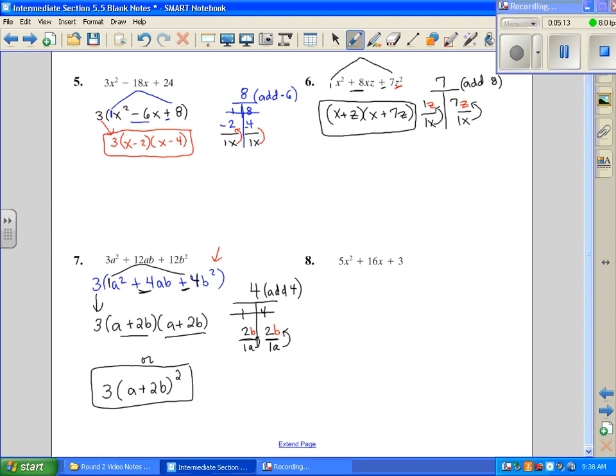Let's look at number 8. We're also going to do the same thing. Check for GCF, there is no GCF. So we're going to start with our bottoms up. We're looking for what multiplies to give us a 15, but it's going to add to give us a positive 16. So that one's going to be, that one's easy for us. 1 times 15 is 15, and it adds to give us 16.